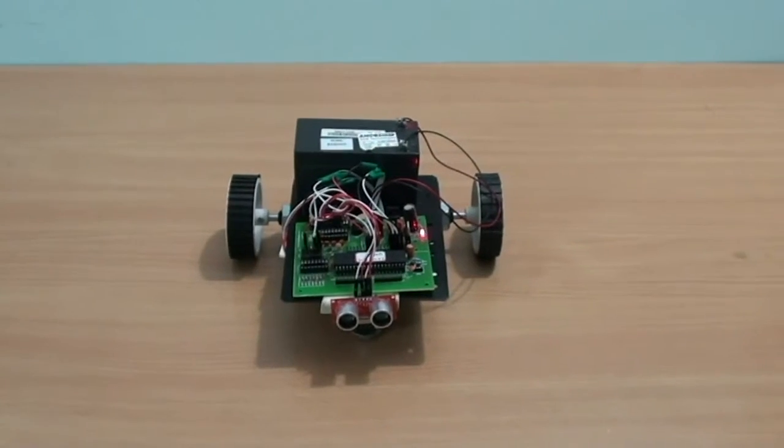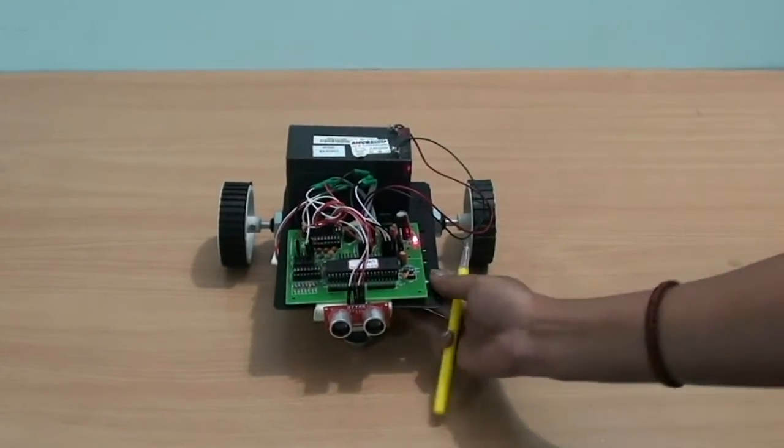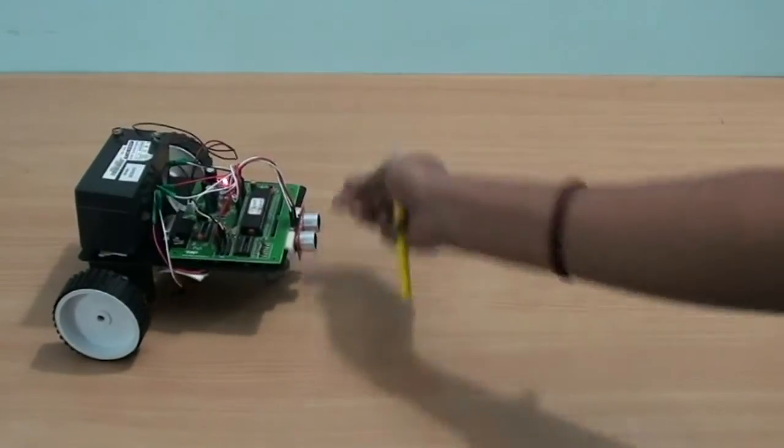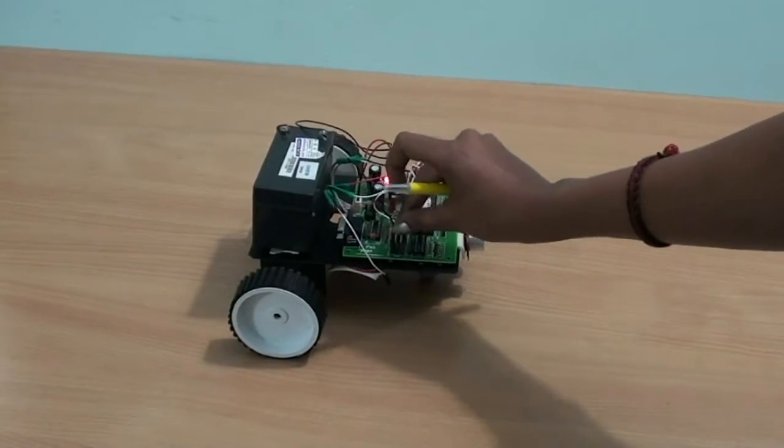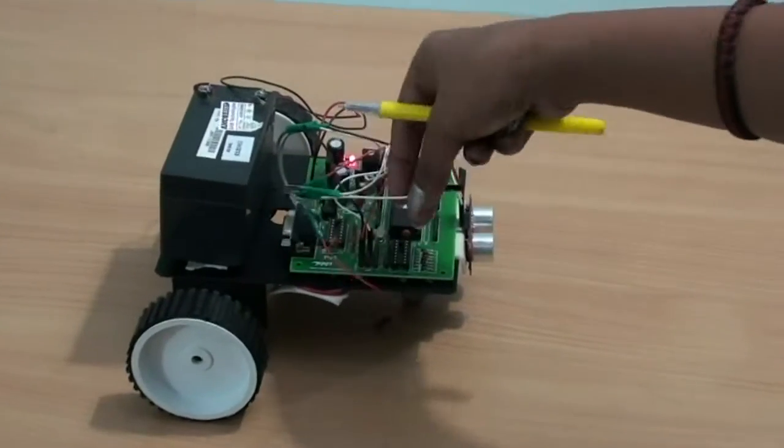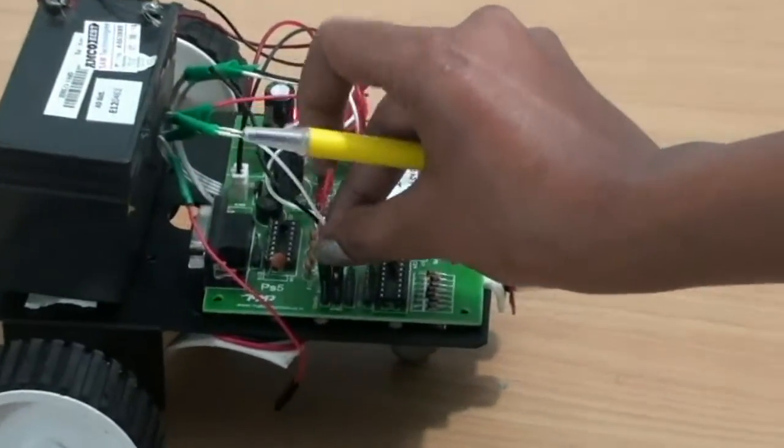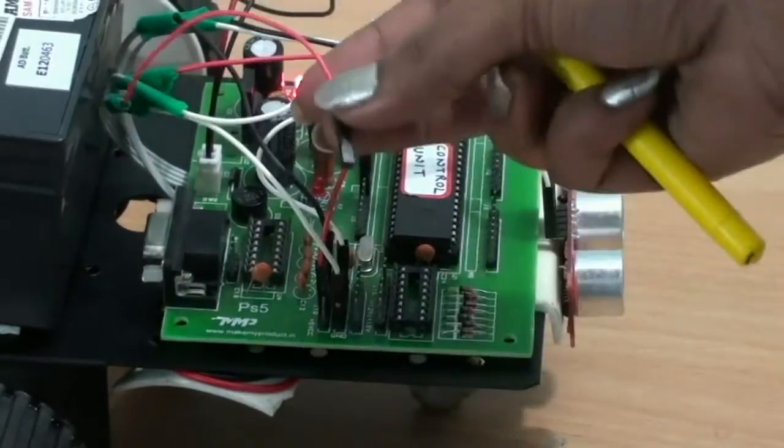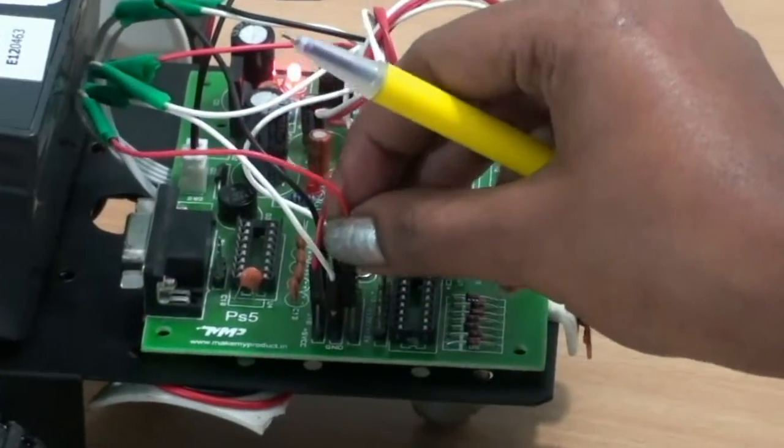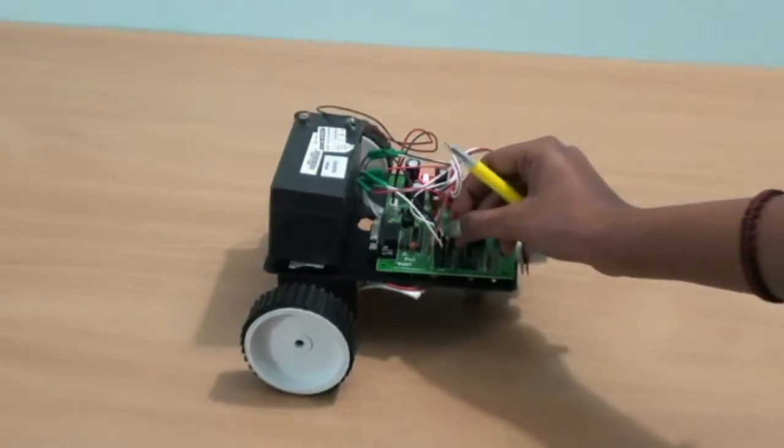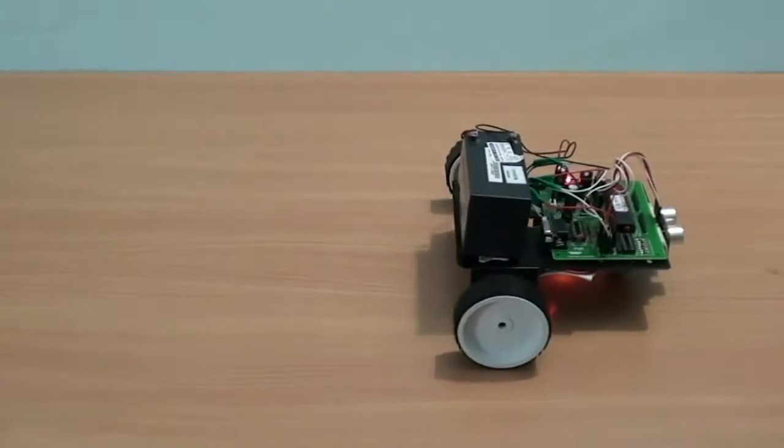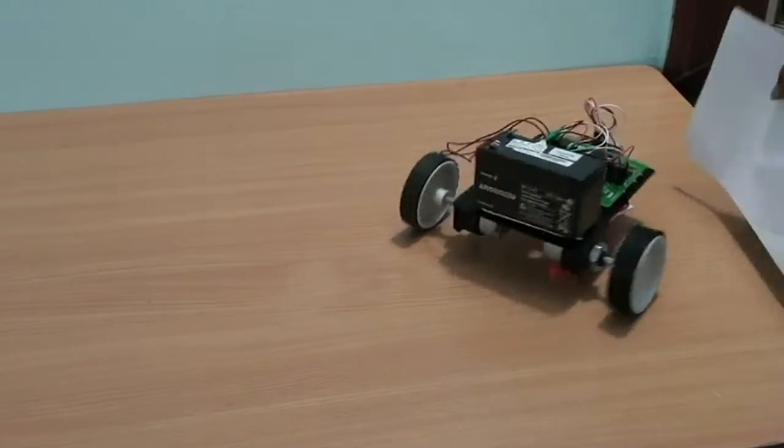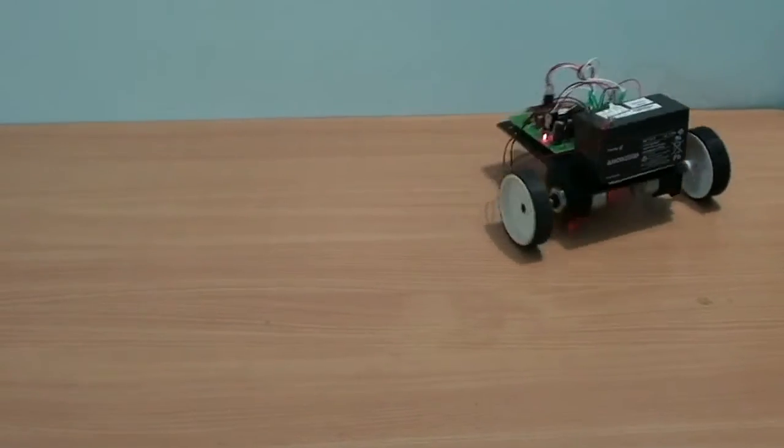Let me now show you the demo of this robot. You can see the white probe which is the ground and the red one is the 12 volt power supply. As soon as the power is supplied, the robot starts moving. You can see when the robot finds any obstacle, it chooses a new path.